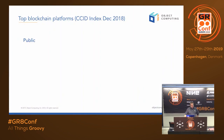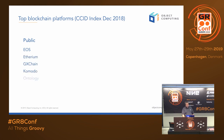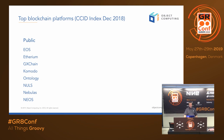Here are the top blockchain platforms. I'm going to talk about one today that happens to have decent Java support. Some of them don't have any JVM support. The most popular ones on the public side are EOS, Ethereum, GX Chain, Komodo, Ontology, Nulls, Nebulas, and Neos. This is an index published every few months by a branch of the Chinese government. There are like thousands of them at this point, and they change places a lot. Ethereum is pretty close to the top — that's a good one to talk about.